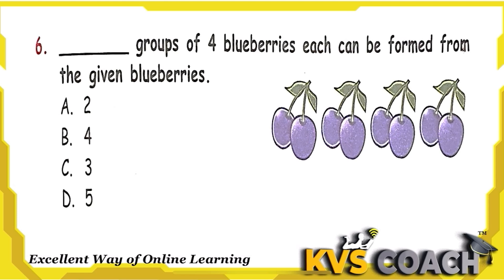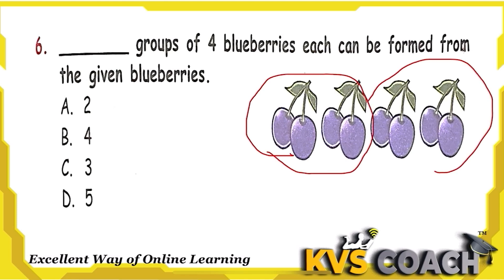The next question: how many groups of 4 blueberries each can be formed from the given blueberries? Counting: 1, 2, 3, 4 — that's one group. Then 1, 2, 3, 4 — that's another group. So there are 2 groups of 4 blueberries. Option A is the right answer.